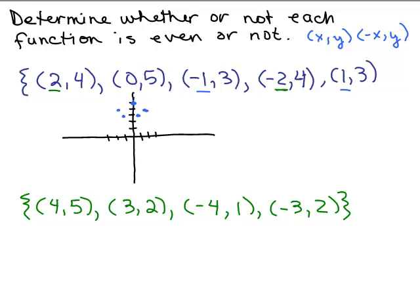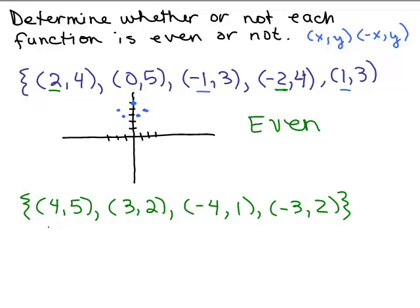What about this next set? For every X value, there must be a -X value with the same Y. Here we have (4, 5), so we need (-4, 5). But there's no (-4, 5) — there's a (-4, 1), which is totally different. Since there's no (-4, 5), it doesn't matter about the rest. This is not going to be even. By the way, we do have (3, 2) and (-3, 2), but for every ordered pair (X, Y), there must always be (-X, Y). This one is not even.